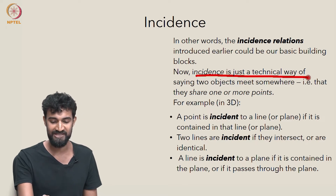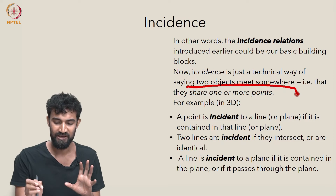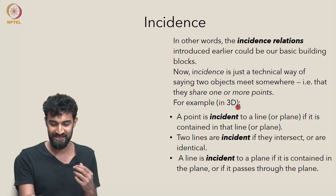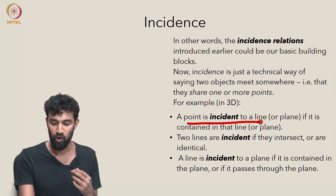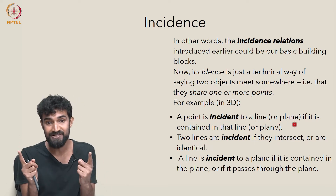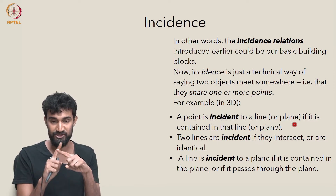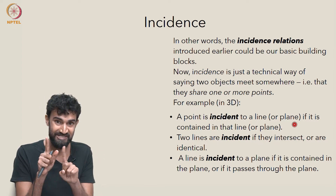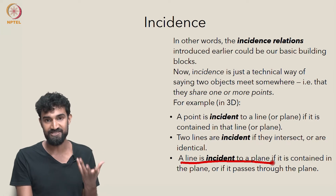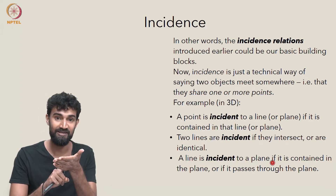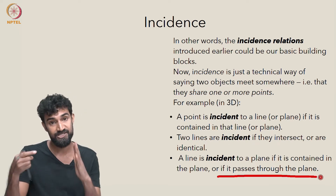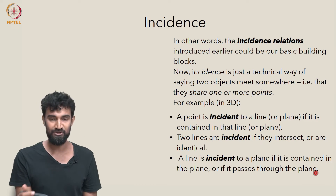Incidence is just a technical way of saying that two objects meet somewhere — in other words, they share one or more points. For example, in 3D, a point is incident to a line or to a plane if it's contained in that line or that plane. Two lines are incident if they intersect or if they're the same line, in which case they share infinitely many points. And a line and a plane are going to be incident if the line is contained within the plane — they'll also share infinitely many points — or if the line passes through the plane, if it pierces the plane, in which case they'll share a single point.